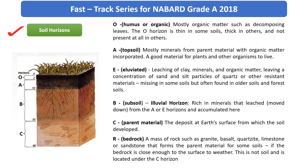Now let us look at the characteristics of each horizon. The O horizon is basically the humus or organic layer. The organic matter present in soil gets decomposed by microorganisms. After decomposition, the dark-colored matter we get is known as humus, which is very essential for healthy plant growth. Mostly this O horizon consists of humus or organic matter, and the thickness of this layer varies depending upon the soil.